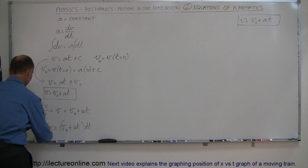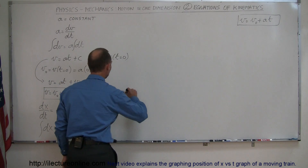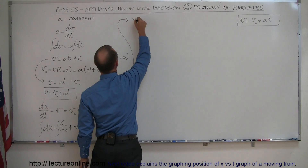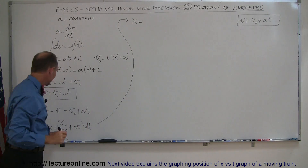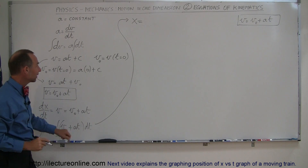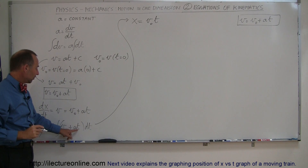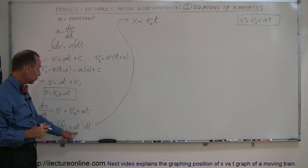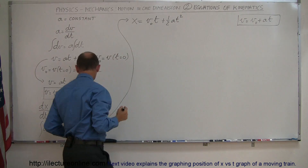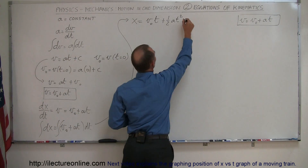Now I integrate both sides. Integrating dx gives x. On the right side, v-naught is a constant, so integrating v-naught dt gives v-naught times t. Integrating at dt: since t integrates to t squared over 2, this becomes one-half at squared. We still have a constant of integration on both sides, which we combine and write as plus c.